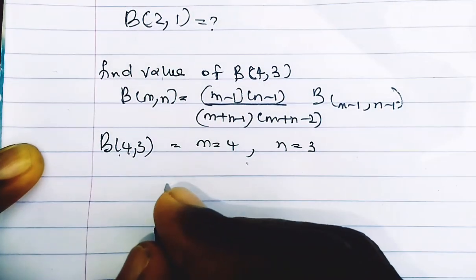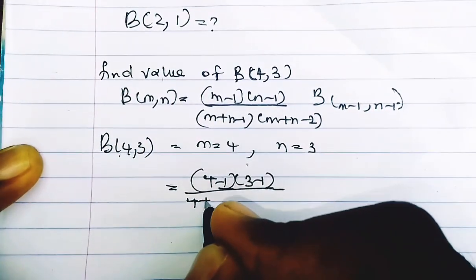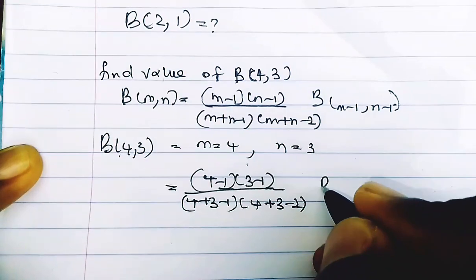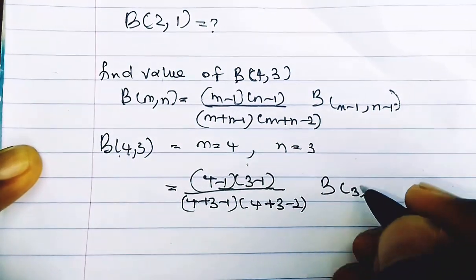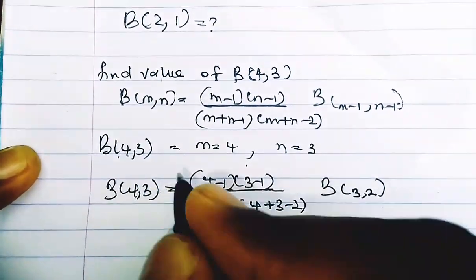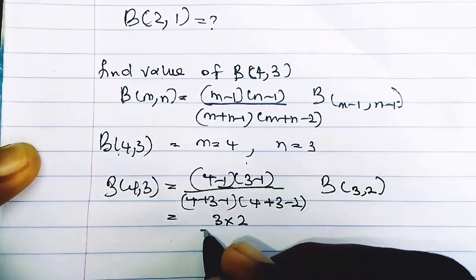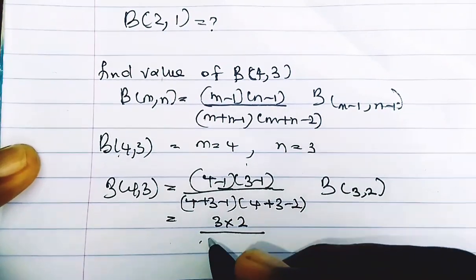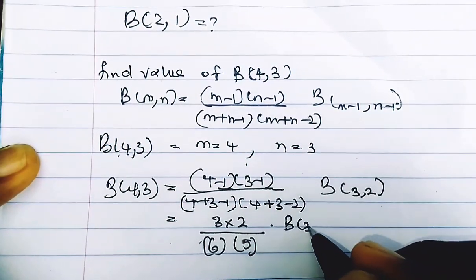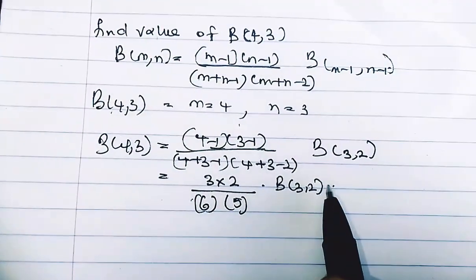Substituting into the equation: this is equal to (4−1)(3−1) / [(4+3−1)(4+3−2)] · B(4−1, 3−1), which is B(3, 2). Simplifying: 3 times 2, divided by 6 times 5, times B(3, 2).